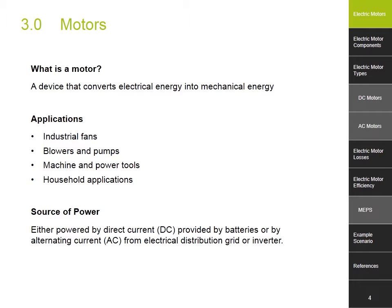An electric motor is an electromechanical device that converts electrical energy into mechanical energy. By electromechanical device, we mean a device which combines electrical and mechanical processes. Electric motors are found in applications as diverse as industrial fans, blowers and pumps, machine tools, household applications, power tools and disk drives. They may be powered by direct current (DC), provided by batteries, or by alternating current (AC) from an inverter or electrical distribution grid.